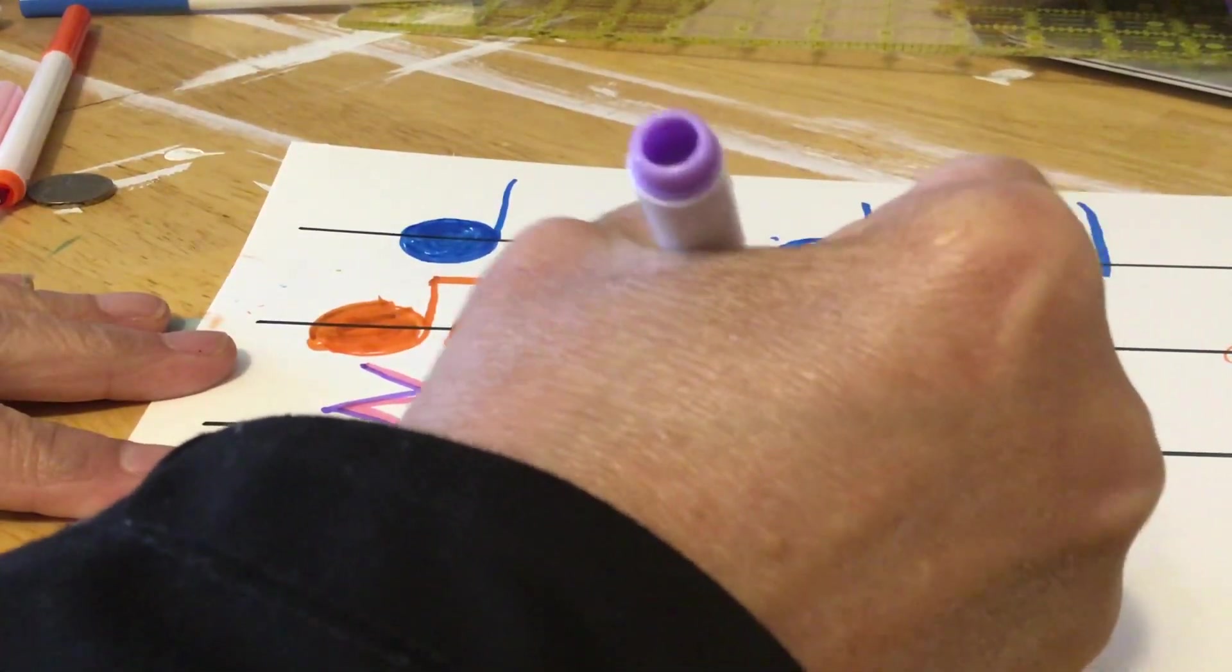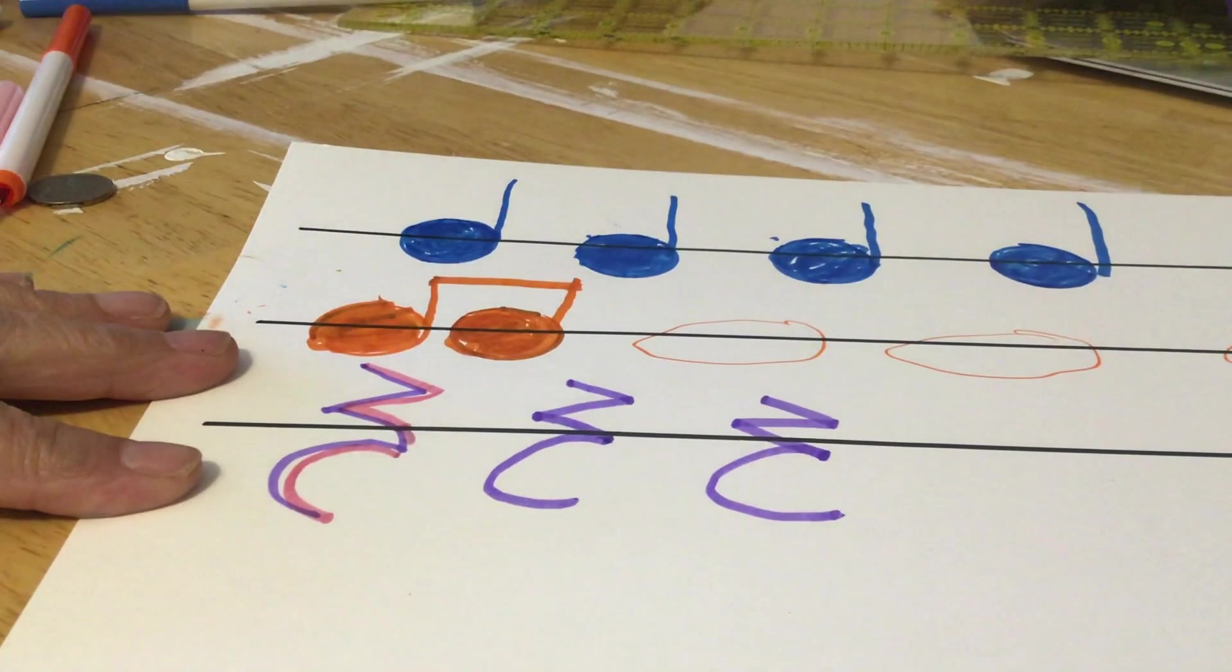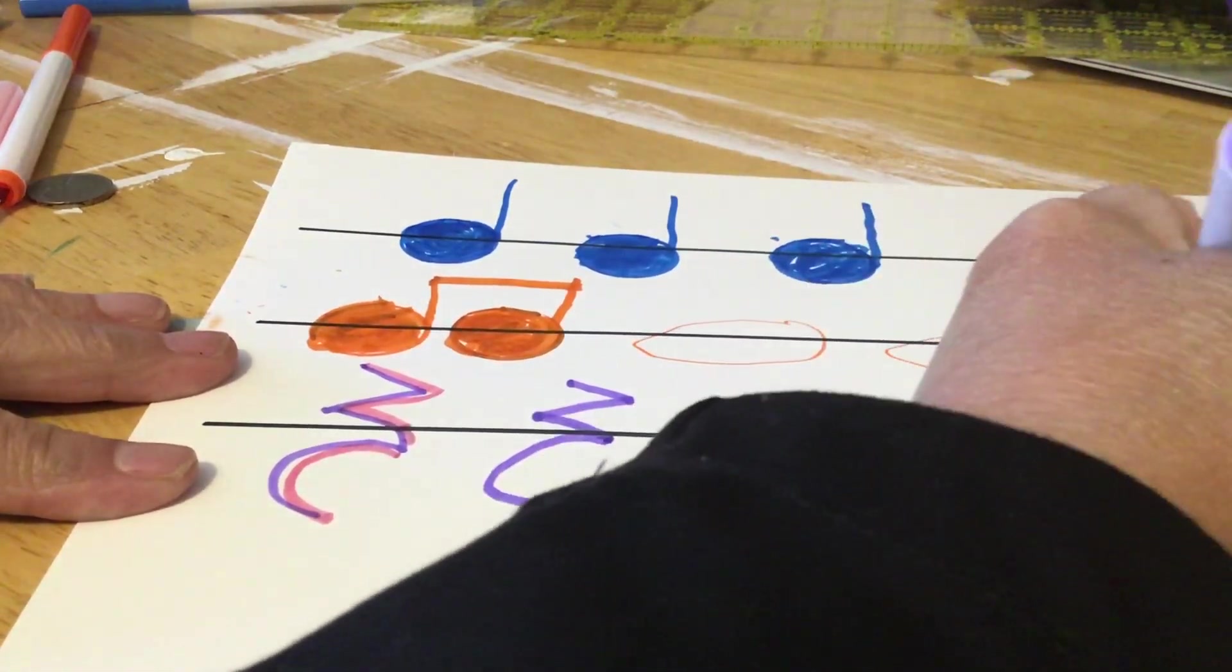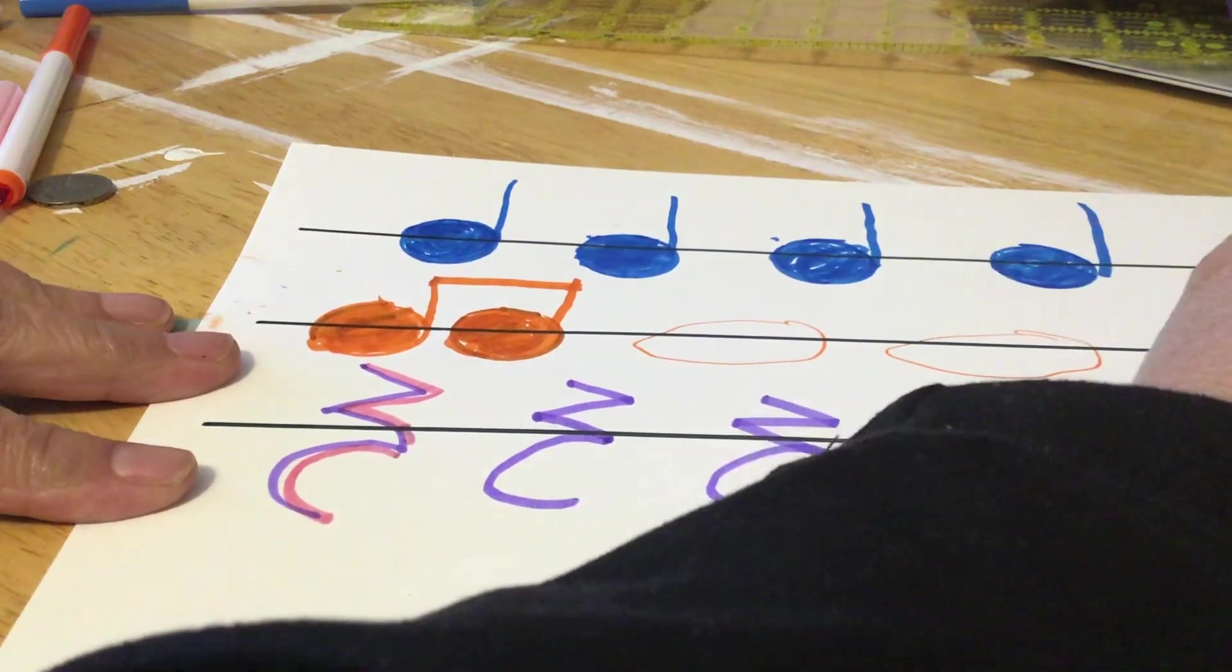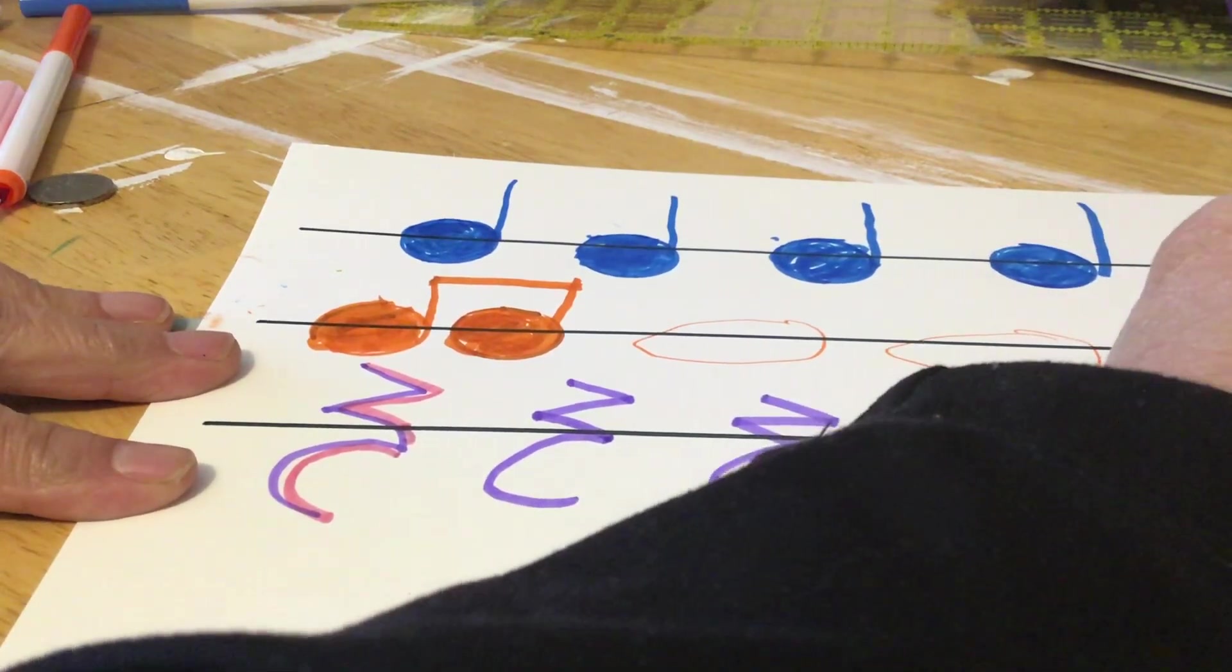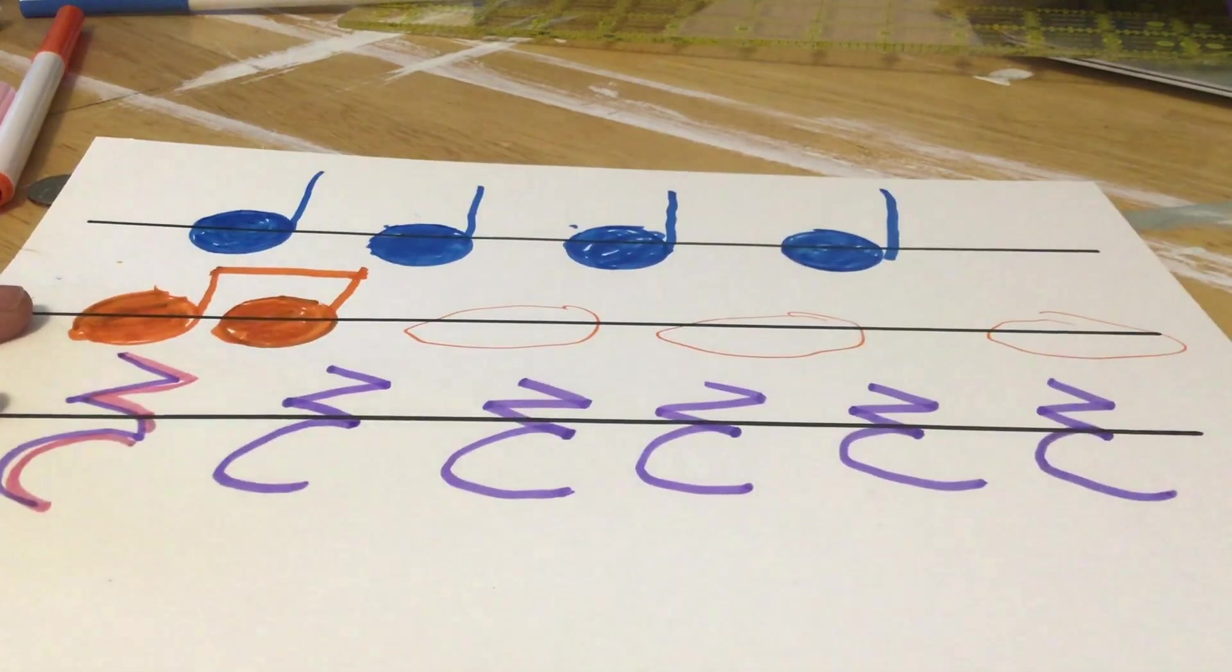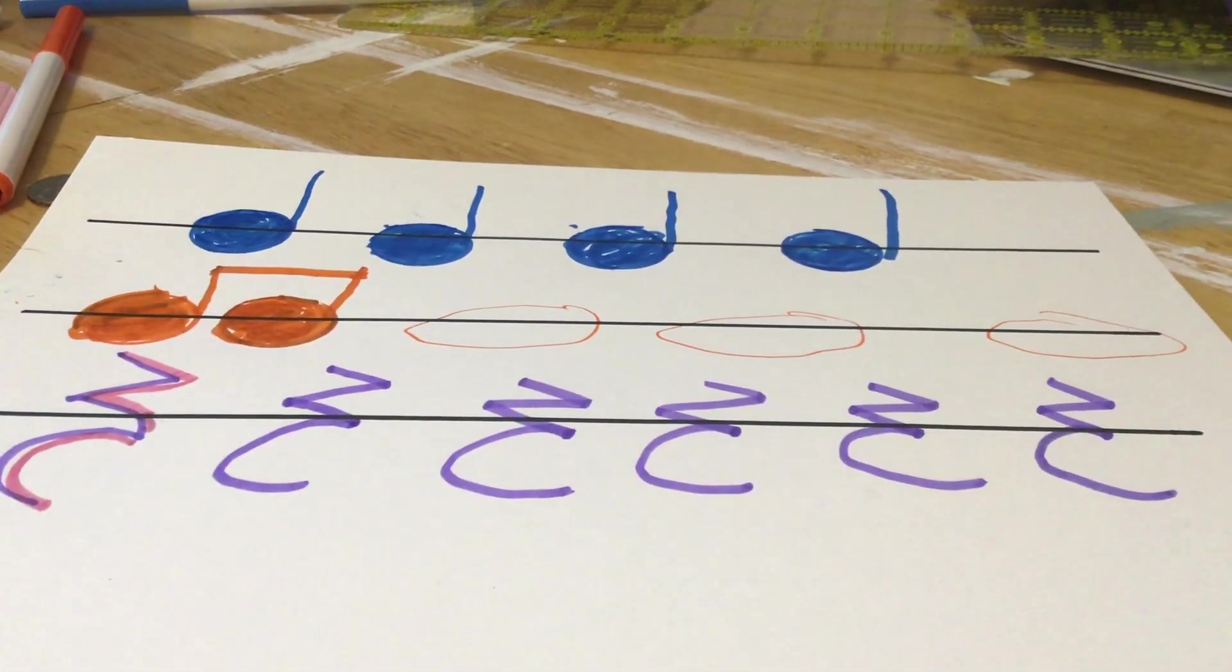So, again, I'm going to take my purple, and I'm going to draw, it's hard to see with my hand here, I know. I'm going to draw a sideways Z and connect it to a C. Sideways Z, connect it with a C. Sideways Z, connect it with a C. And you can draw as many fit on your line. I was able to get six on mine.